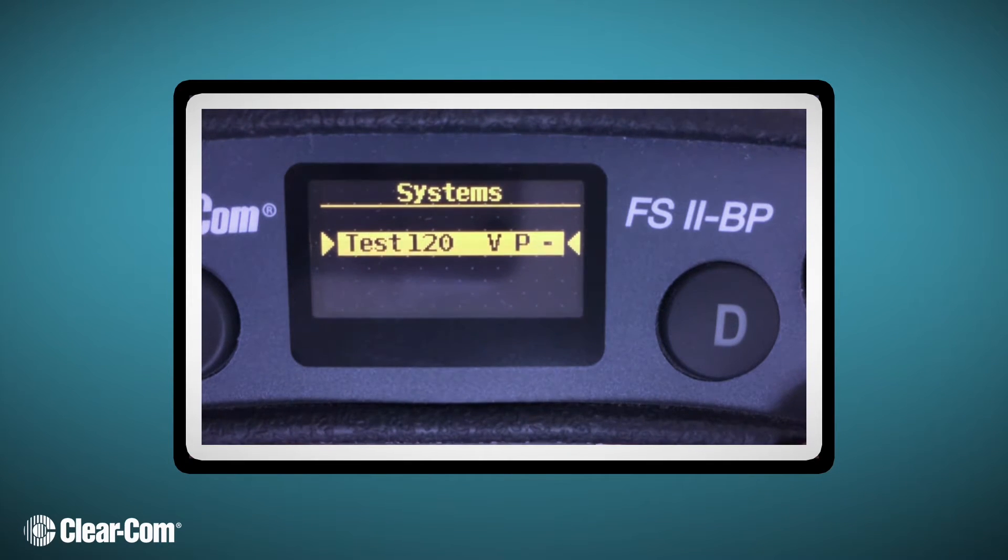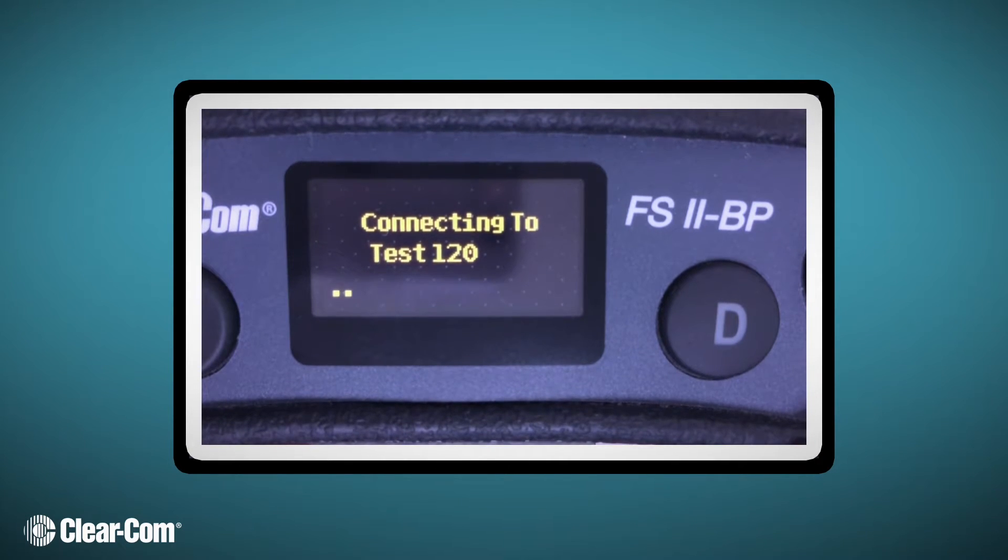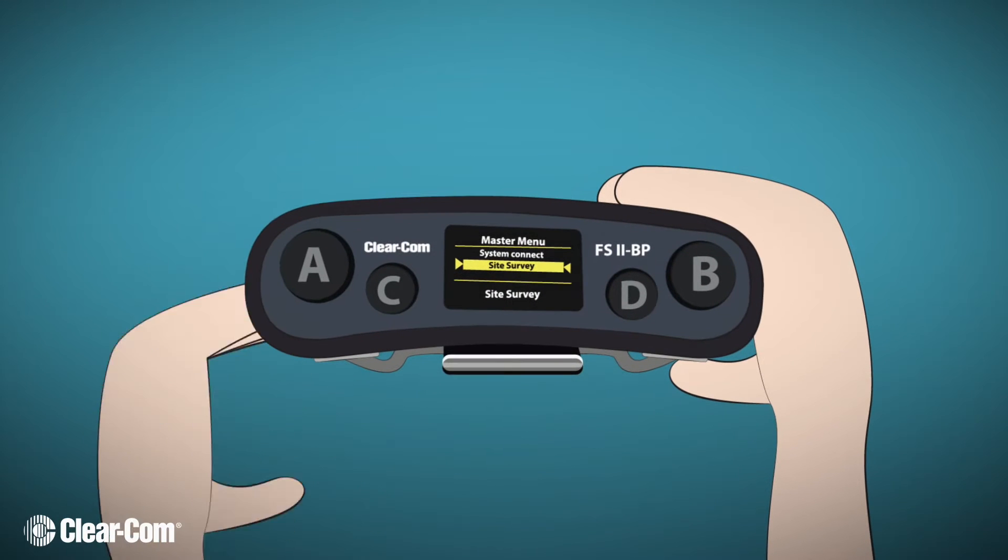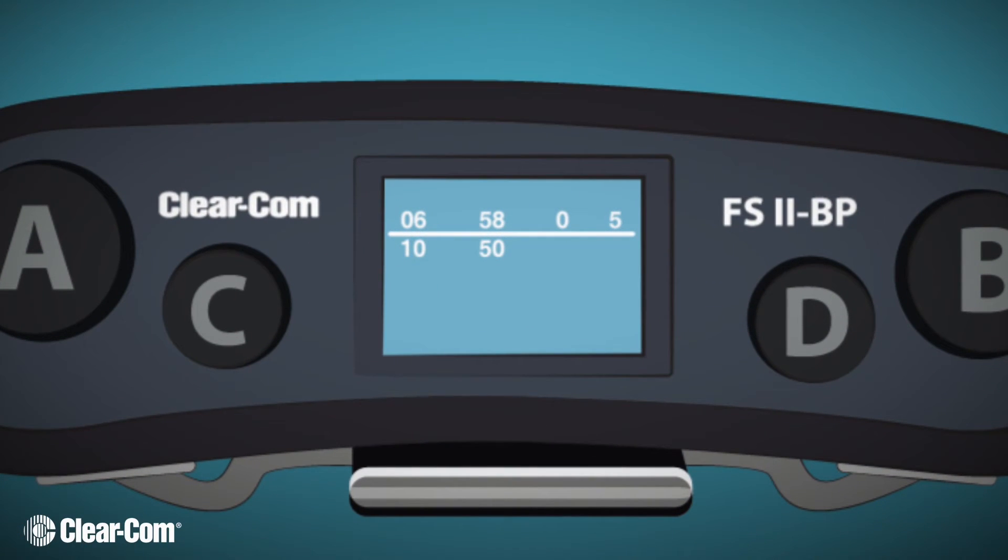Next, scroll to Test System. Select D to confirm Select to System. Once connected, use the menu to navigate to the site survey mode screen. You can see the metric of signal strengths under the site survey mode.